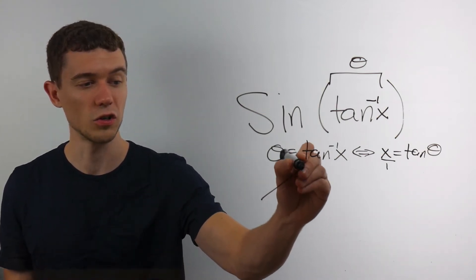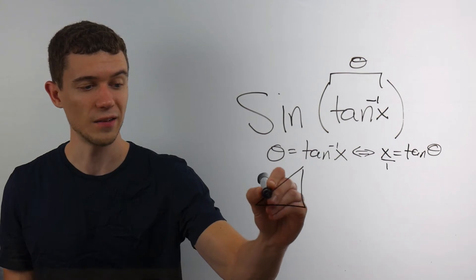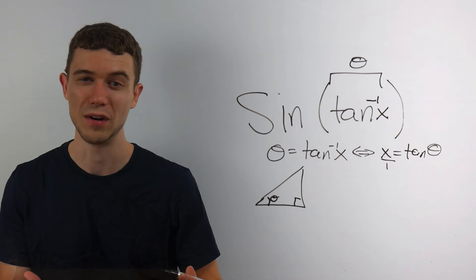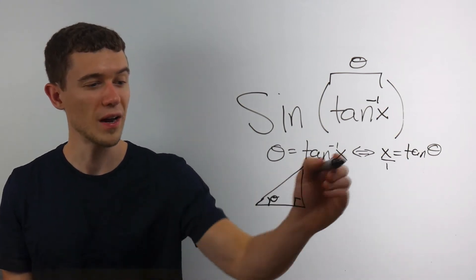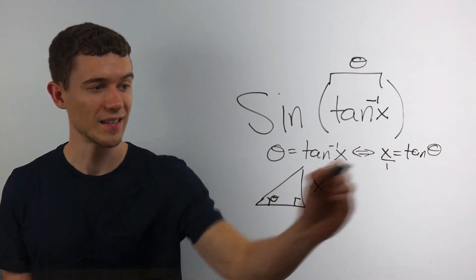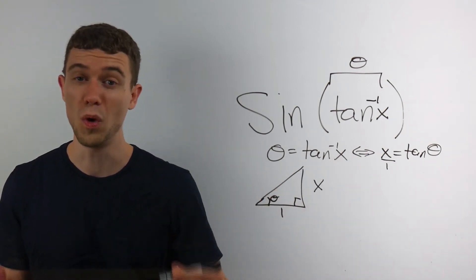If you like, you can draw a triangle and signify where your angle theta is. This is a right triangle, although maybe it's not the best drawing of one I've ever drawn. But we know now that the opposite of this angle is x and the adjacent of this angle is 1 because tangent is opposite over adjacent.